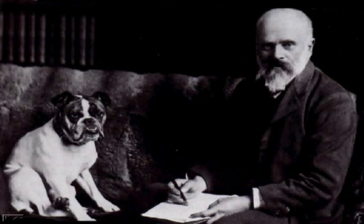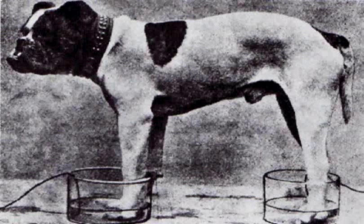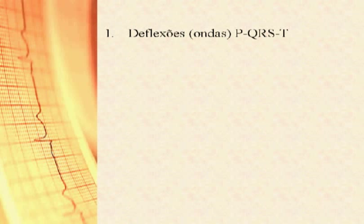Aqui nós temos uma foto do fisiologista Augustus de Waller com seu cão Jimmy e uma ilustração do experimento de Augustus de Waller com o cão Jimmy, no qual ele provou que a atividade elétrica do coração pode ser gravada através da superfície corpórea. As deflexões PQRST descritas por Einthoven estão associadas às ondas de excitação que se espalham pelo coração e liberam todas as forças de contração do coração.